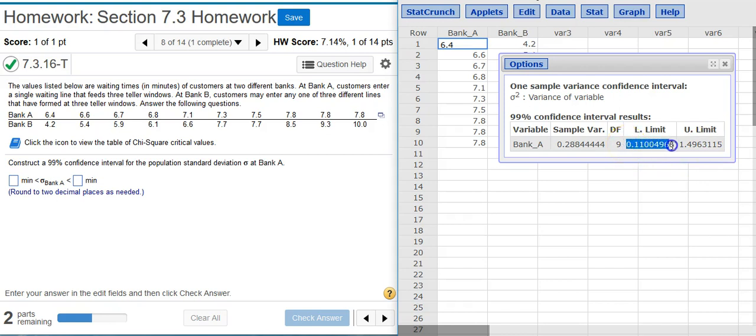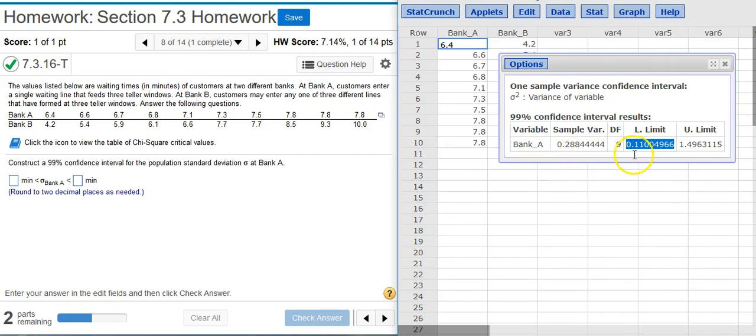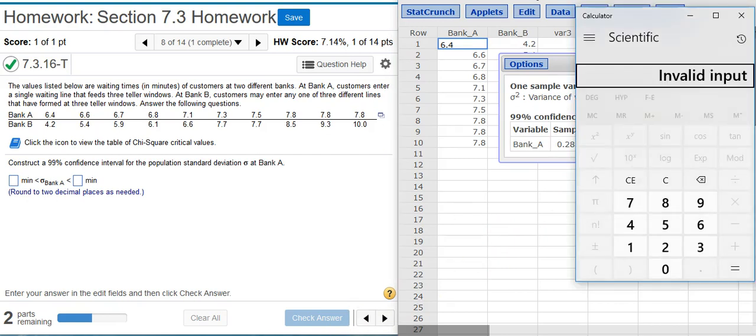To start, I'm going to copy the value here for the lower limit and then I'm going to pull up a calculator where I can paste the number in with Ctrl V on my keyboard. Oh, I didn't like that. Let's try this again. I'm going to copy that number from StatCrunch, go to my calculator, put the number in, take the square root,